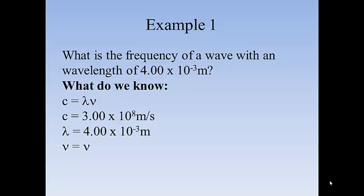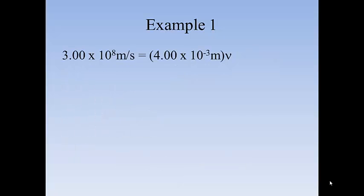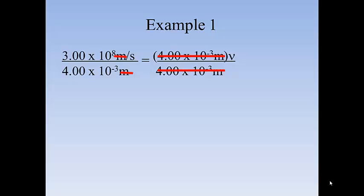But if you look, we know 2 out of the 3 variables in this equation. So all we have to do now is just plug and chug. So we set the equation up. We divide both sides by 4 times 10 to the minus 3 to isolate the ν or get the ν by itself. And you end up with 0.750 times 10 to the 11th per second equals the frequency. But this is not in correct scientific notation. Move the decimal point to the right by one decimal point. So you're going to decrease the exponent by one. And you get 7.50 times 10 to the 10th per second equals the frequency.